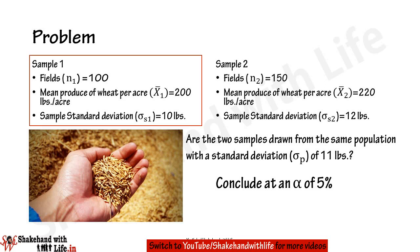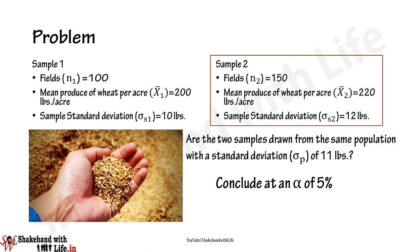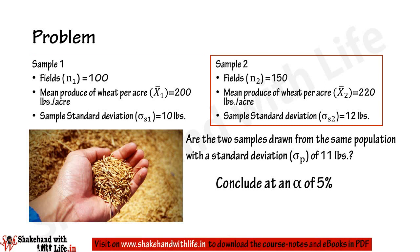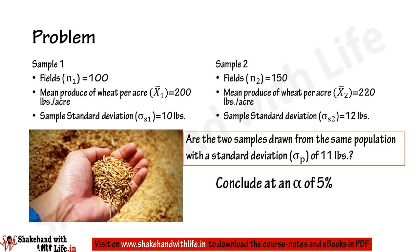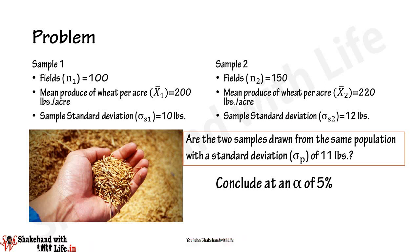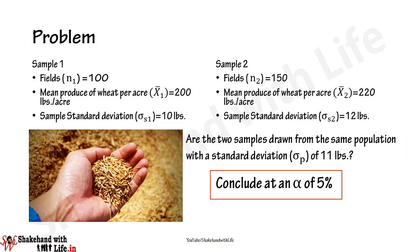Now let's take a problem to understand the application of Z-test for these conditions. The mean produce of wheat of a sample of 100 fields is 200 pounds per acre with a standard deviation of 10 pounds. Another sample of 150 fields gives a mean of 220 pounds per acre with a standard deviation of 12 pounds. Can the two samples be considered to have been taken from the same population whose standard deviation is 11 pounds, at a five percent significance level?